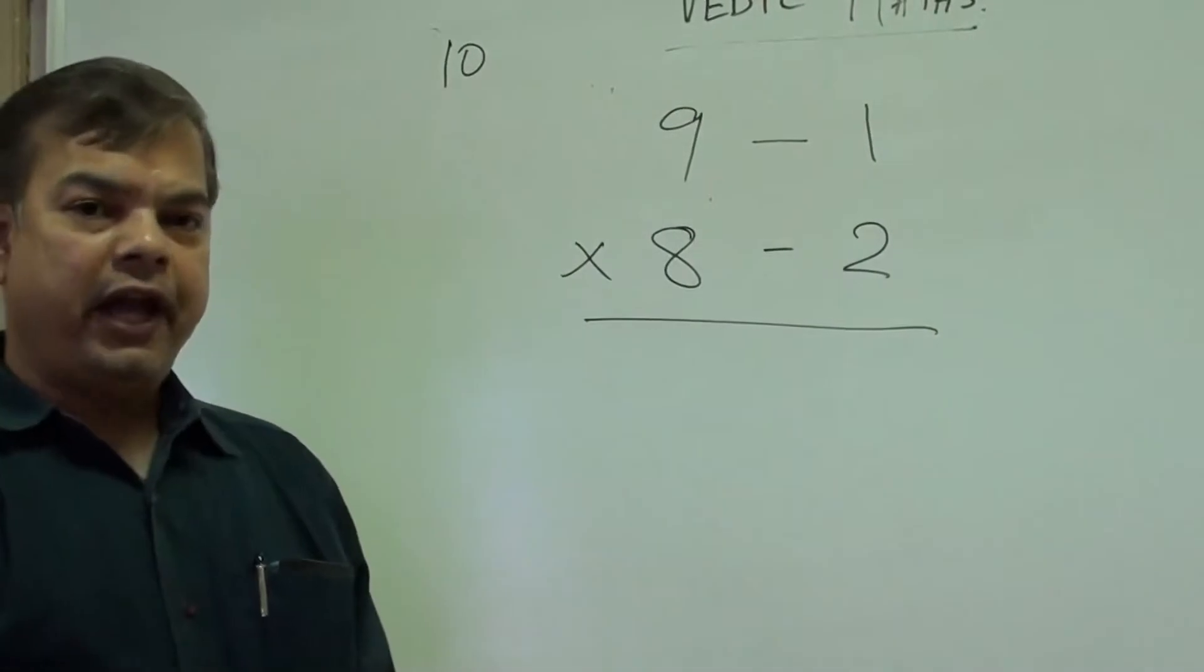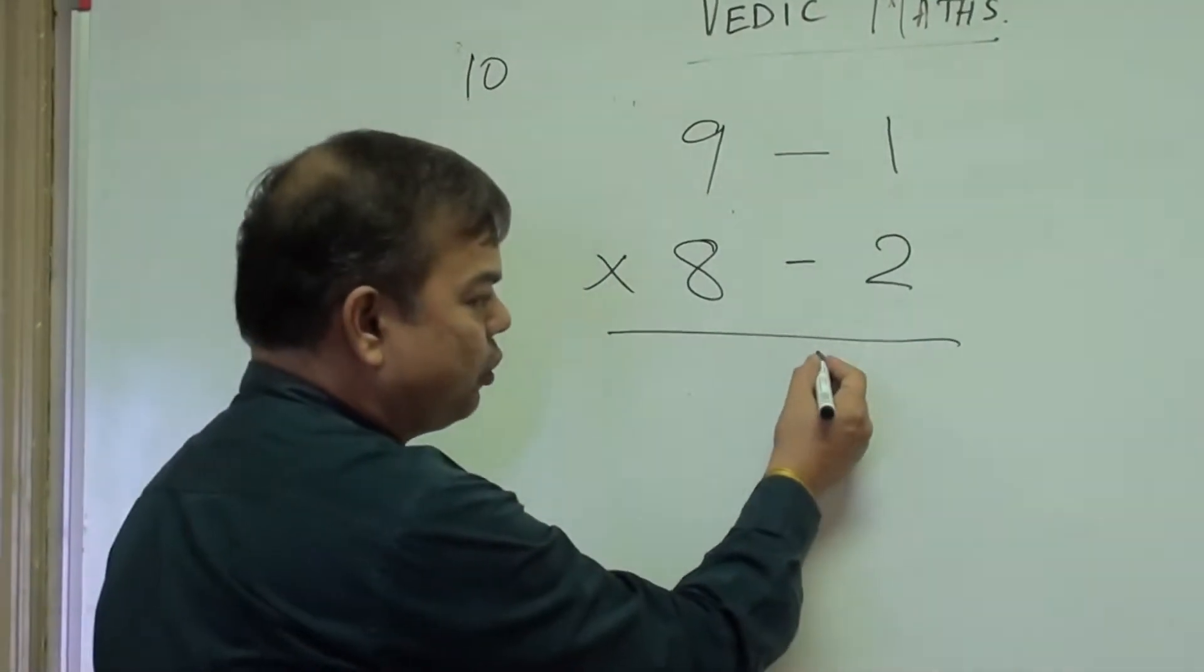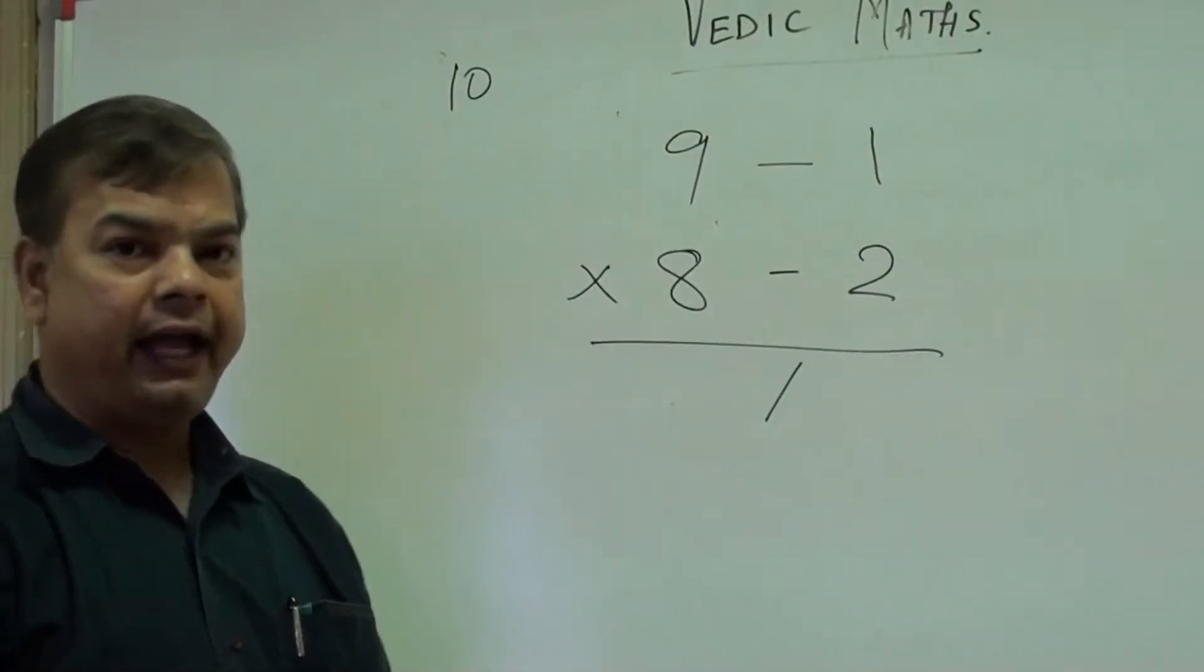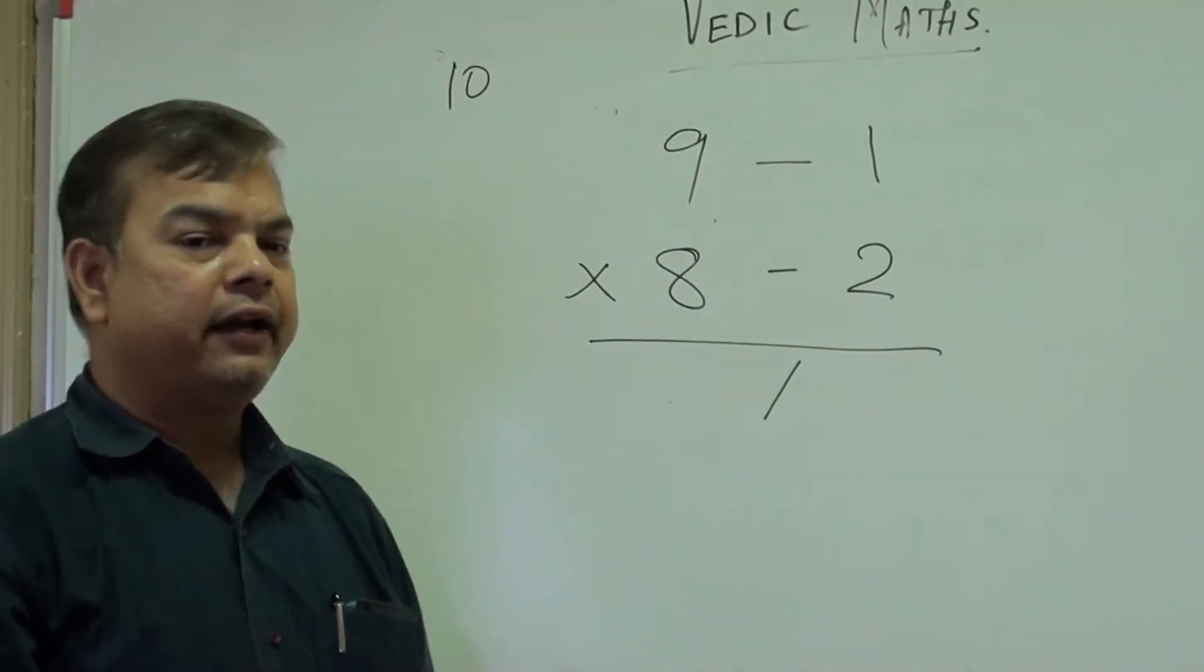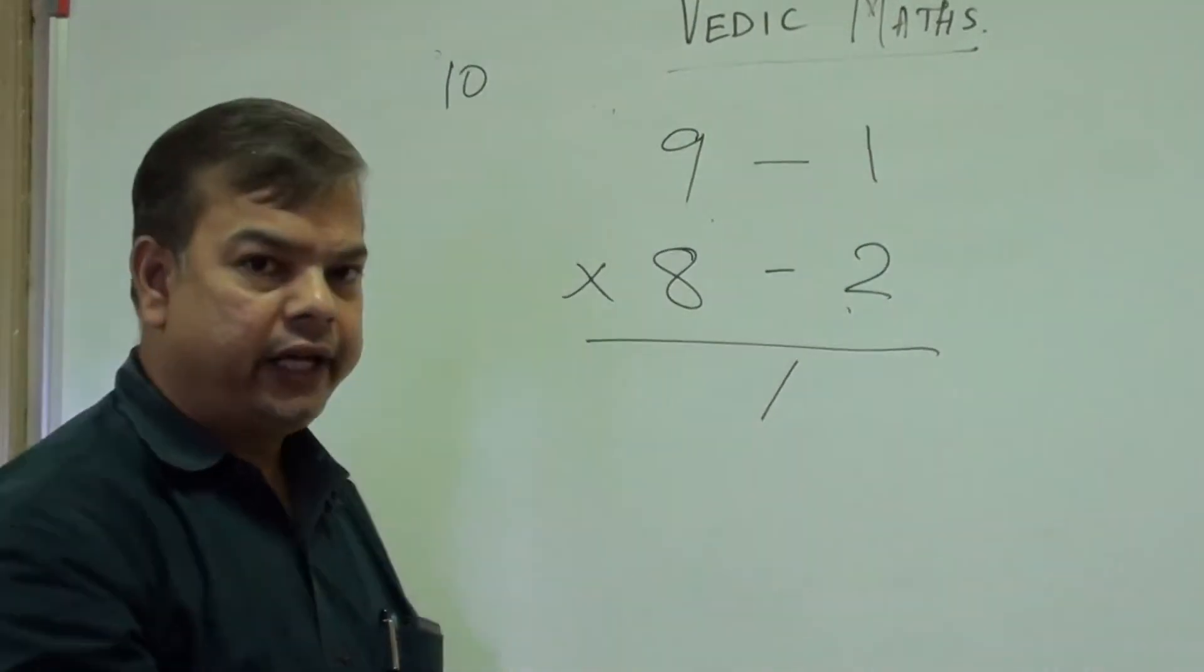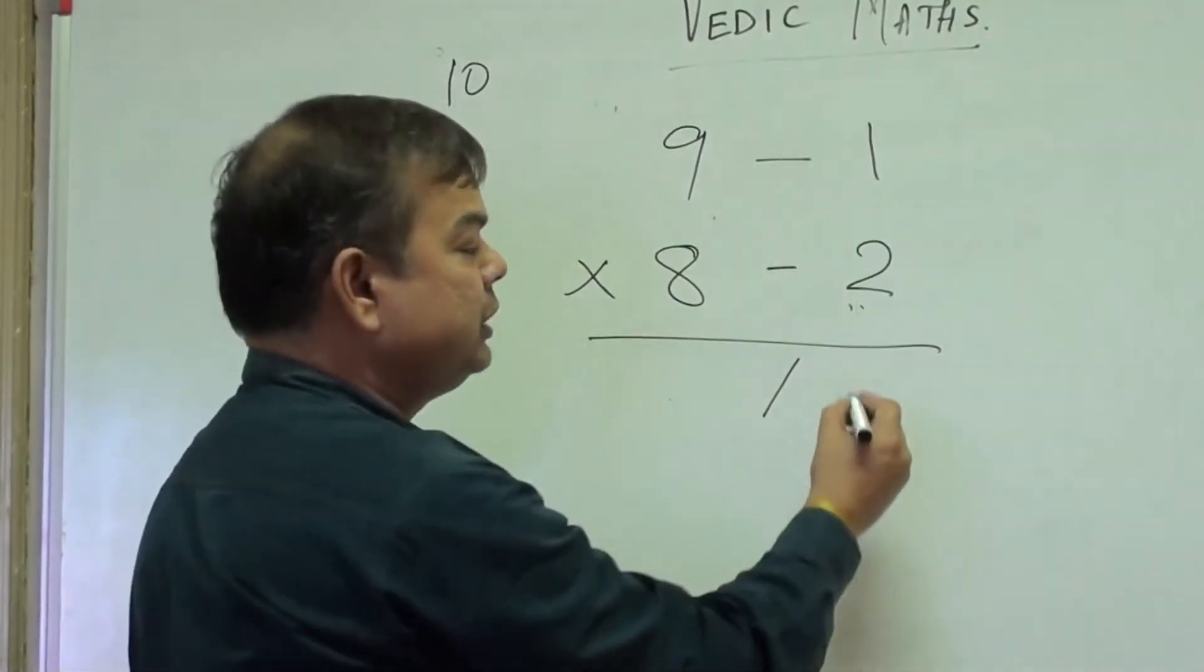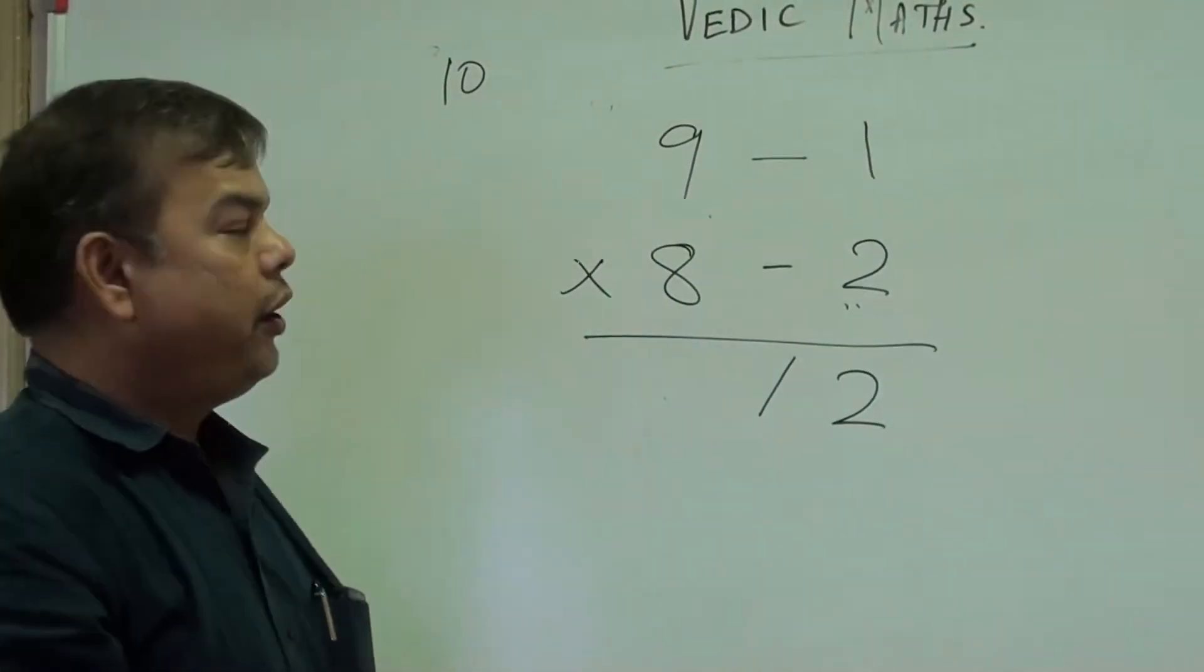Now as we have learned earlier, we will write a forward stroke just below this sign. Now you have to multiply minus 2 with minus 1. Now you know that when you multiply minus 2 with minus 1, the answer is plus 2, because minus 2 into minus 1 is plus 2. So your multiplication is over.